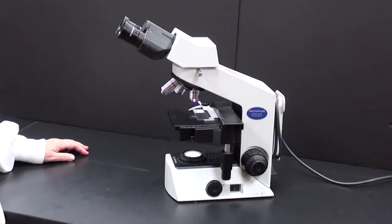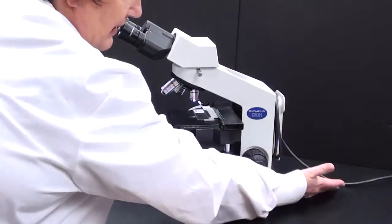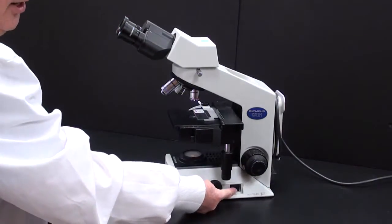Let's take a look at the parts of the light microscope that you need to know. Obviously this is the power cord. This is the on and off switch.